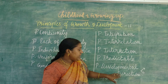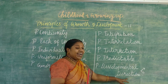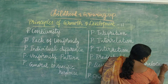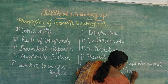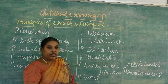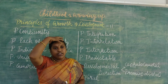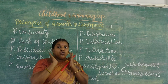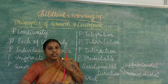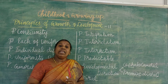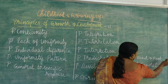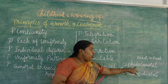Then the principle of developmental direction. Growth and development proceeds in a direction. One direction is called cephalocaudal, and another is proximodistal. Cephalocaudal means the growth proceeds from head to foot. A newborn infant has a very large head portion. Then as they mature, the head size relatively reduces while the length of the legs and arms increases. That head-to-foot direction is called cephalocaudal.